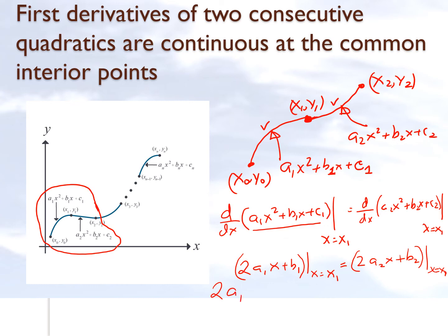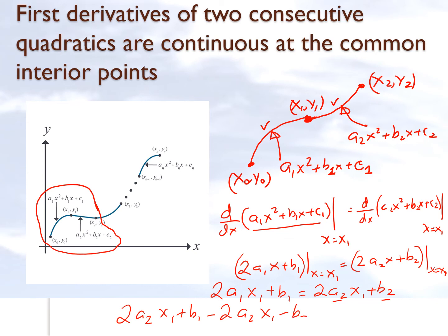So we get 2a₁x₁ + b₁ = 2a₂x₁ + b₂, which rearranges to 2a₁x₁ + b₁ − 2a₂x₁ − b₂ = 0. That is the equation obtained by requiring the first and second splines to have a continuous slope at the common point x = x₁. Since there are many interior data points, we need to count how many such equations we can develop.